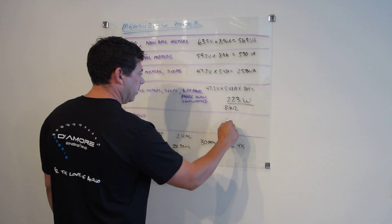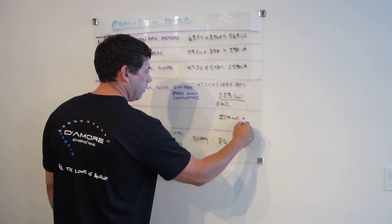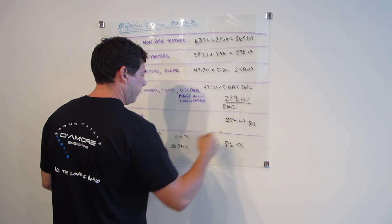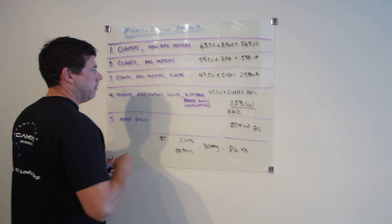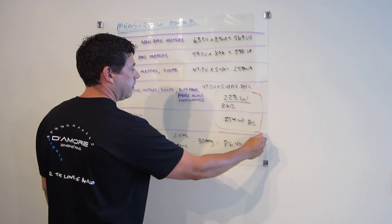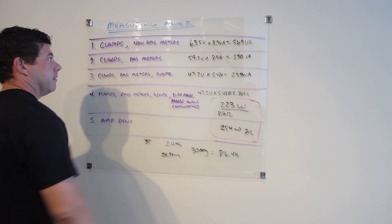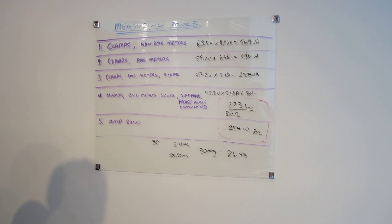So we ran on the amp dyno. We got 254 watts at 8 ohms. So these two right here are real power numbers. The rest of this doesn't really mean a whole lot.